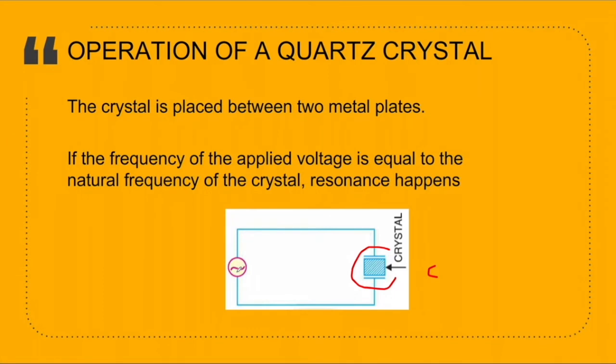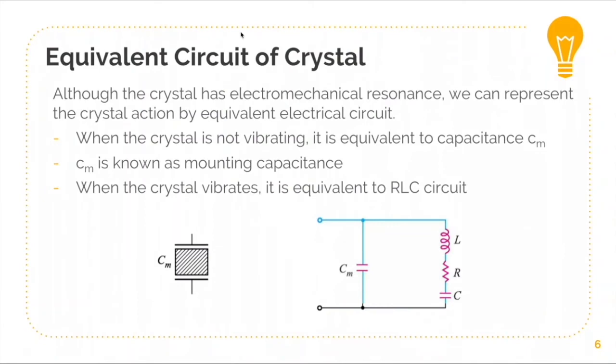And the crystal vibration will reach its maximum value. The crystal oscillator can be represented by the components R, L, and C. And it is in the matter that when the crystal is not vibrating, then it serves or it acts like a capacitor, it has a CM. And this CM is the mounting capacitance when it doesn't vibrate.